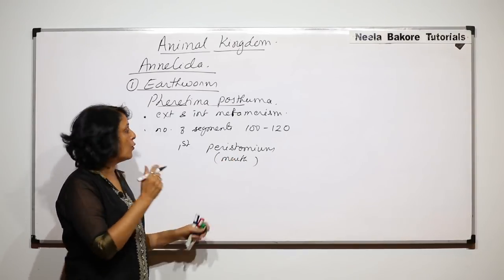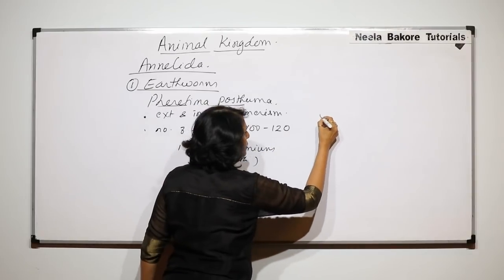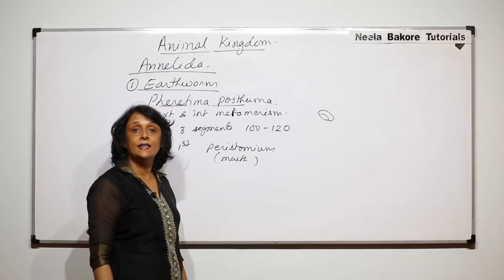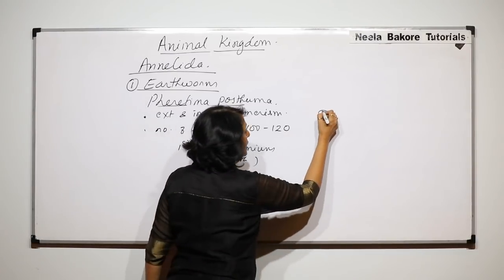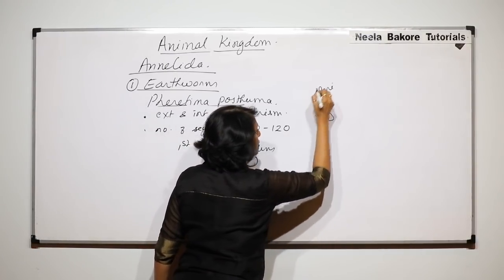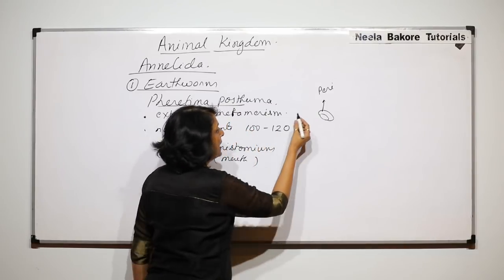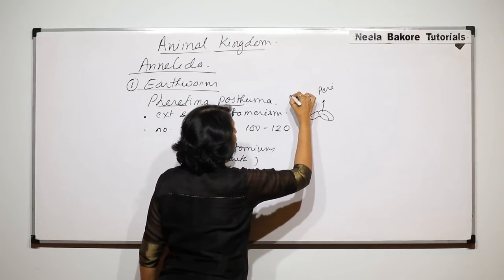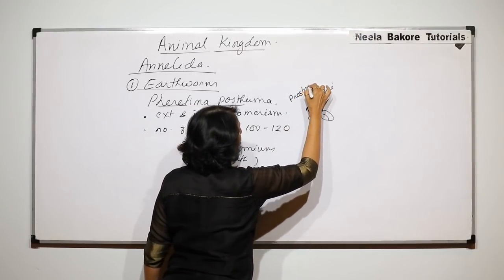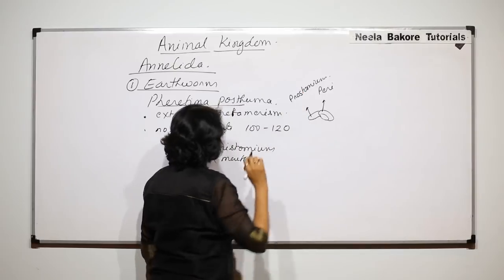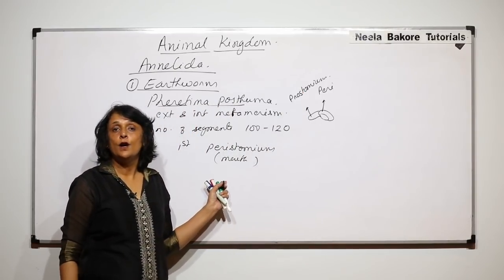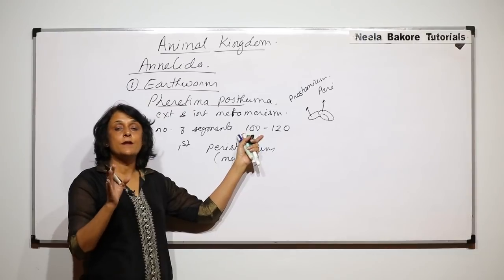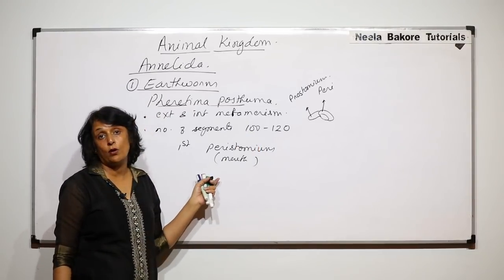In front of the peristomium there is a segment which is hanging, and that is known as the prostomium. 'Stoma' means an opening, so peristomium is surrounding that opening. The first segment contains the mouth — that is the peristomium — and the prostomium hangs in front of it. The number of segments varies from 100 to 120.